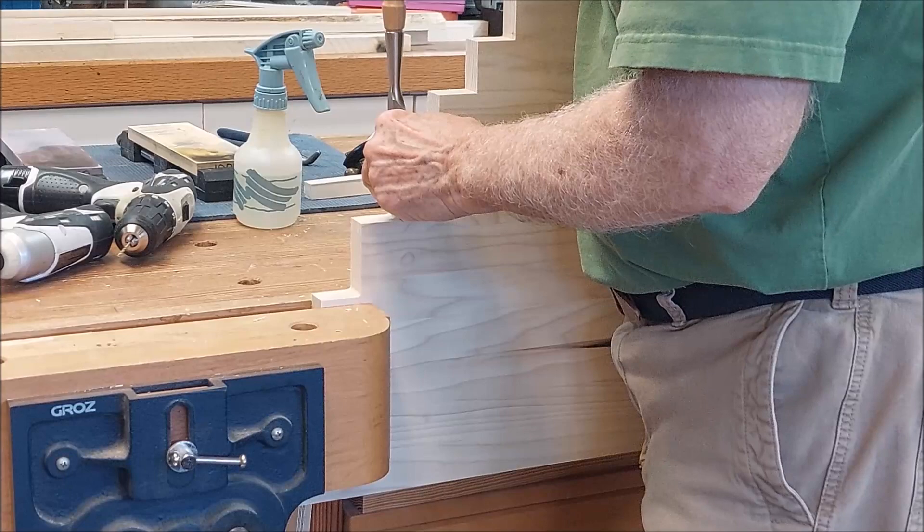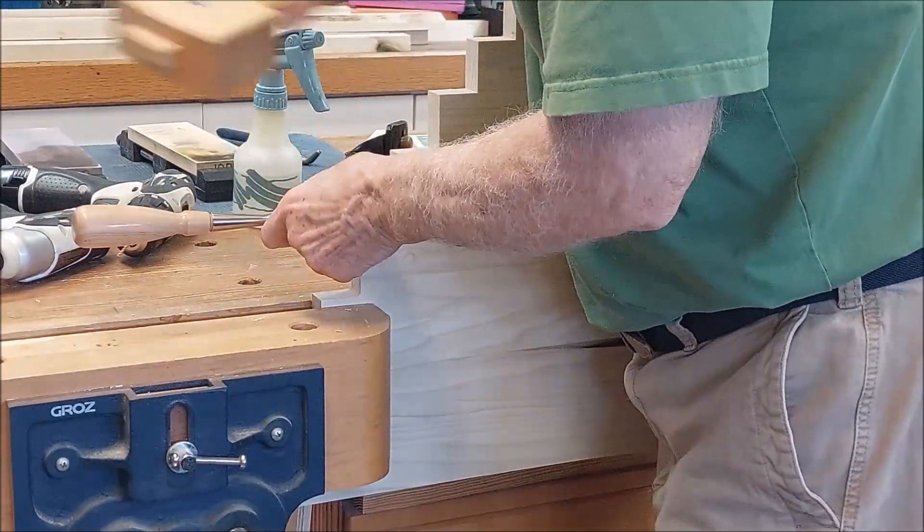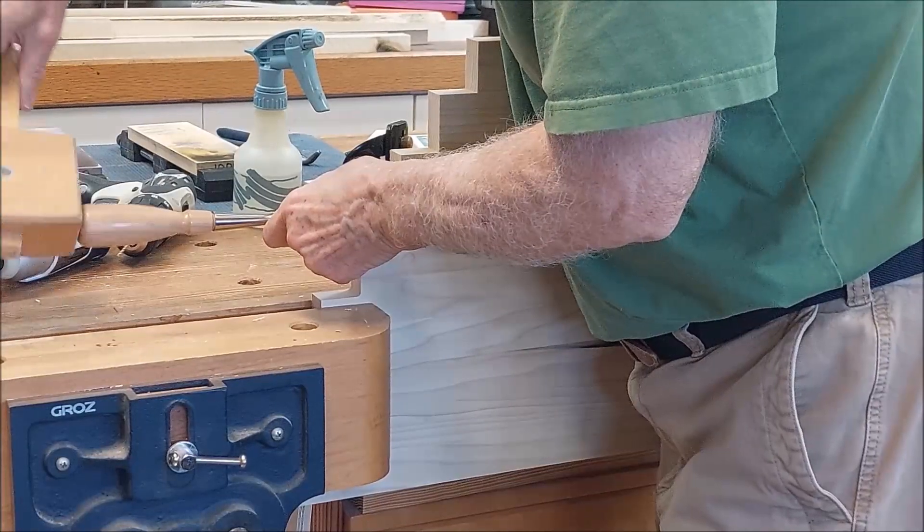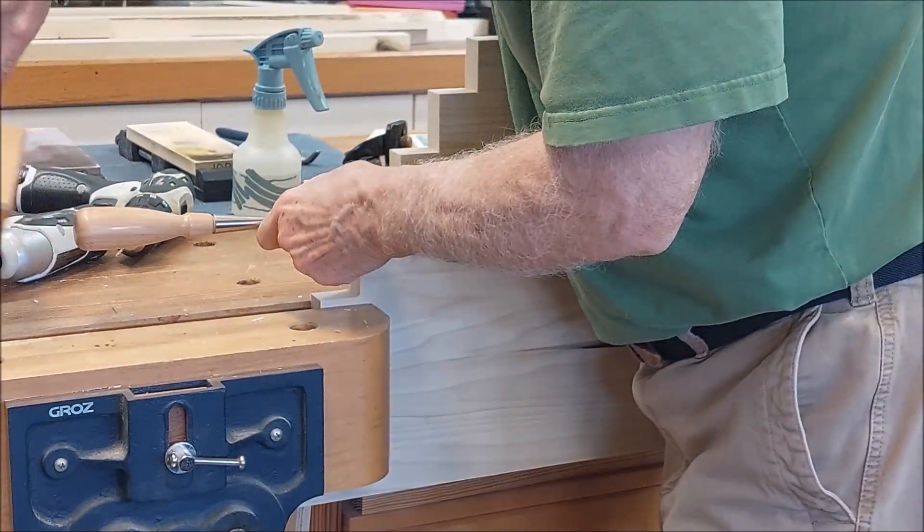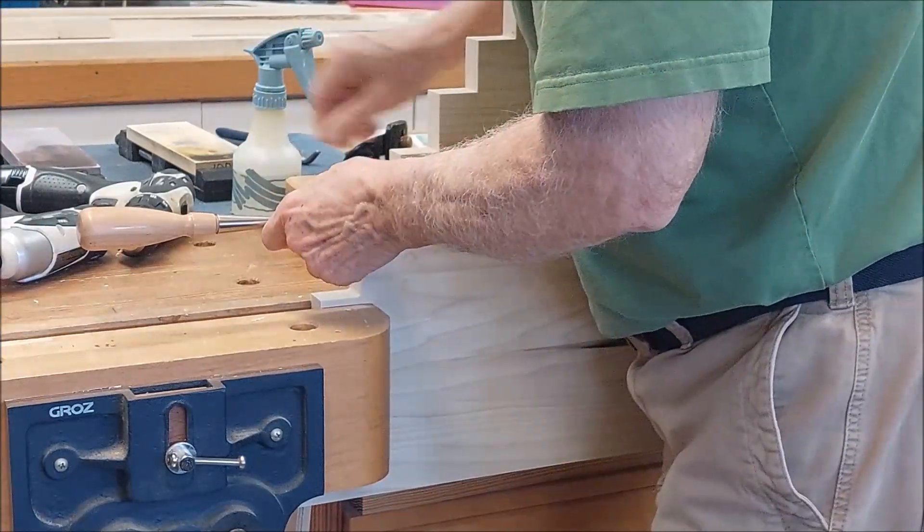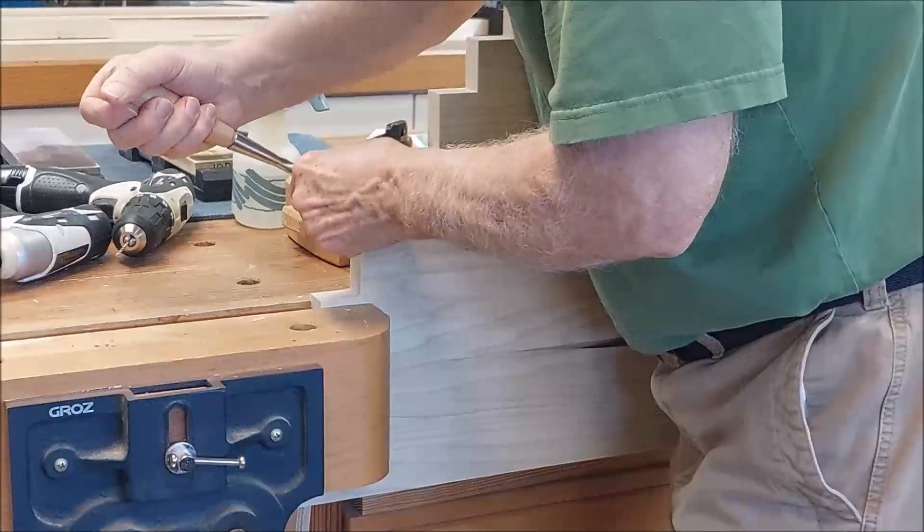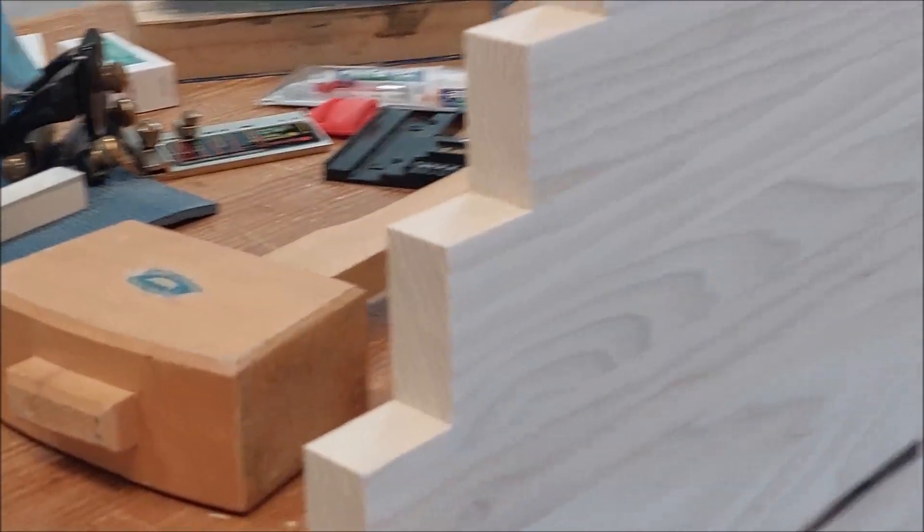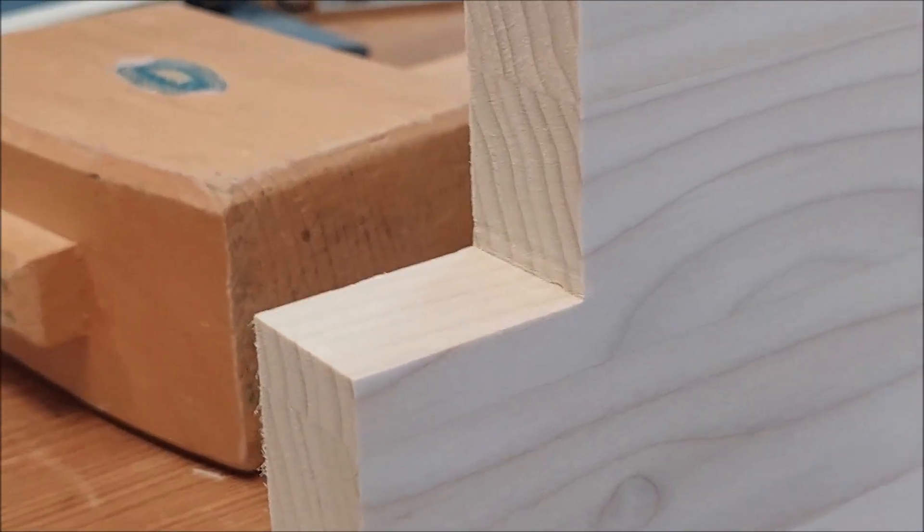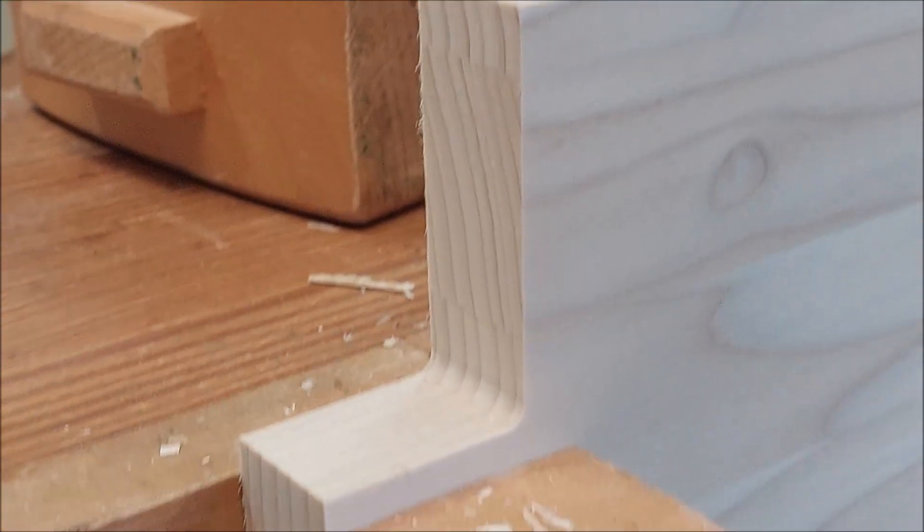Hand work with the chisel was required to square up the rounded areas left by the end mill on the CNC. Here is after the squaring and here is before.